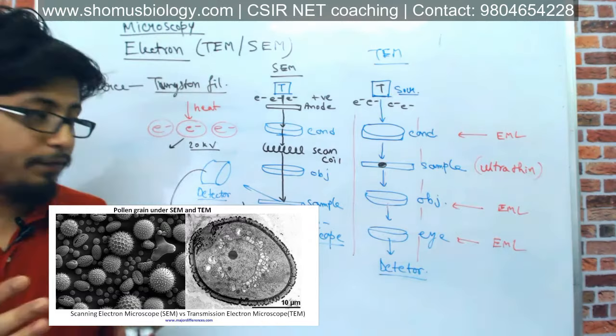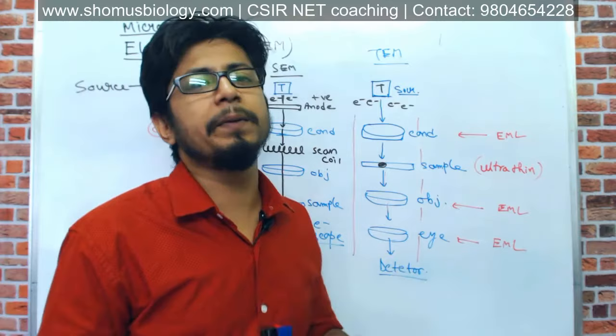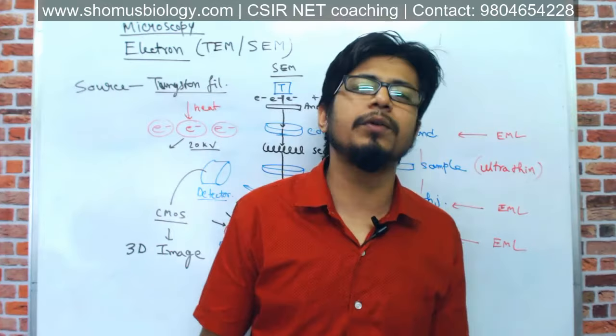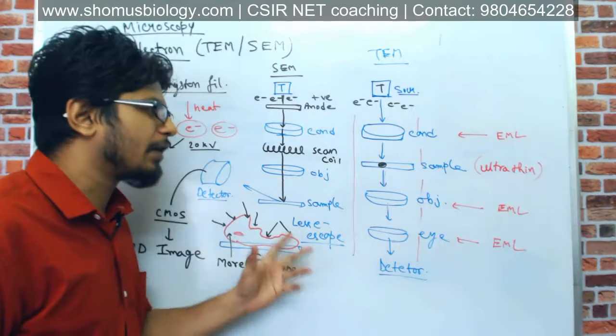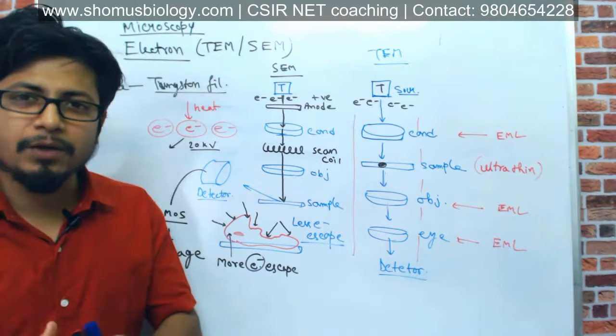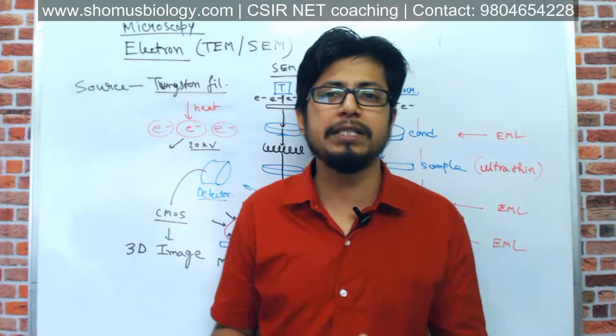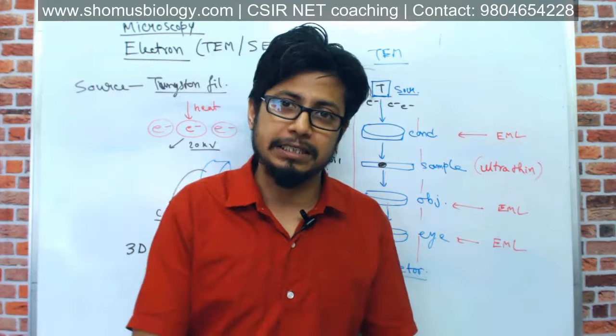A major disadvantage of both SEM and TEM is that sample specimen preparation requires killing the sample, so any living sample will be killed in the process. Setting that aside, both SEM and TEM are very good ways to obtain crisp, detailed data of a specimen with much greater resolution. Their uses differ: TEM is used to see a detailed magnified and high-resolution image of internal structures, while SEM is focused on obtaining the three-dimensional picture of the sample specimen as it is.